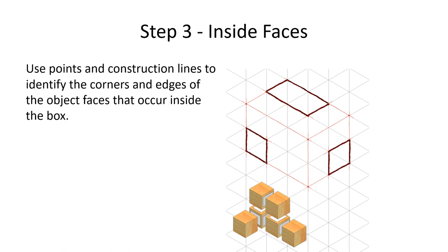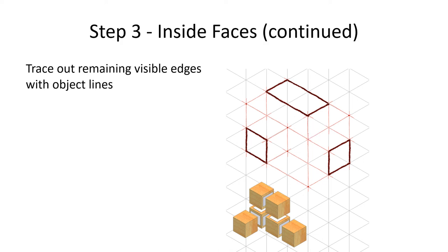It says use points and construction lines to identify the corners and edges of the object faces that occur inside the box. So you drop down. I like to go one direction at a time like they just did. They just put all the things that kind of go down there and then you change your thought process. Okay, now these lines are all going this way. And then what lines are going this way? So starting at the face on the right hand side, they're going to draw those lines in. Now don't forget about those corners. You see this one they just drew. You want to make sure you draw in the corners and then this one here.